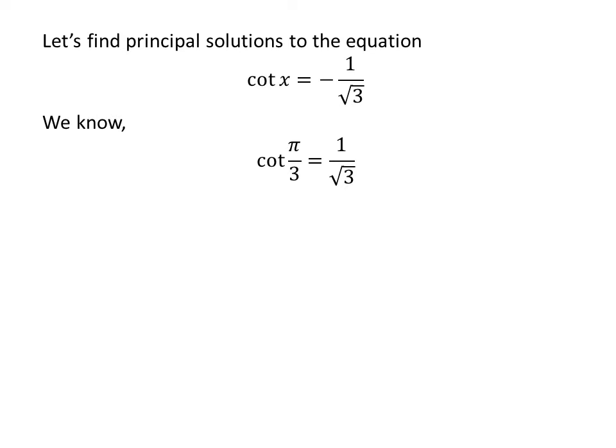We know the value of cotangent of pi upon 3 is 1 upon square root of 3. We also know the trigonometric identity: cotangent of pi minus a is equal to minus cotangent of a. The proof of this identity is given in the video linked in the description.